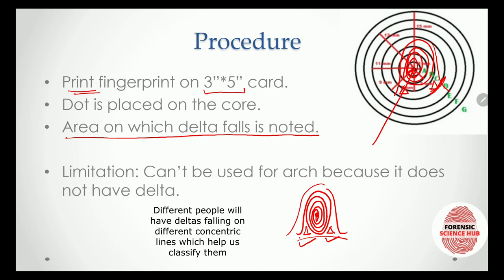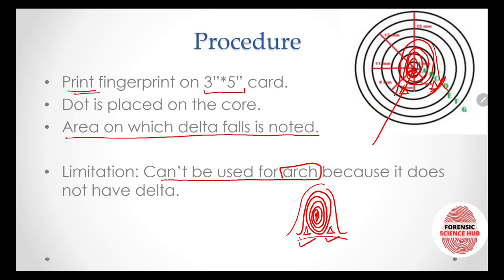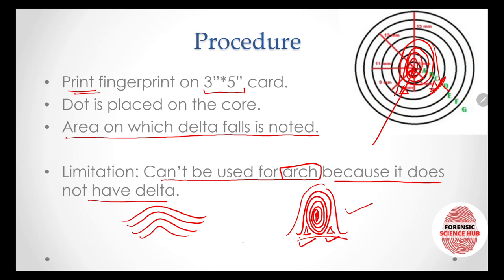However, there is a limitation to this process: it cannot be used for arches. This is because arches do not have any delta — arches simply go across with no delta formation. Whorls have a delta, and loops also have a delta, but arches do not. Since there is no delta, we cannot count the concentric circles and the technique cannot be applied.